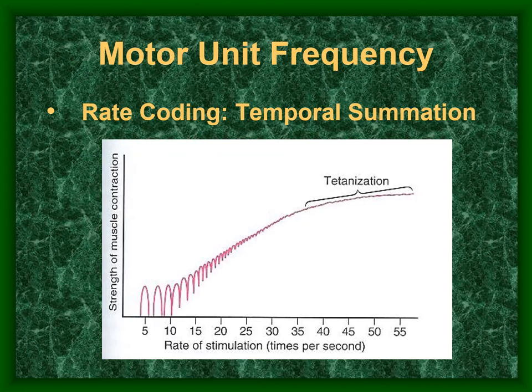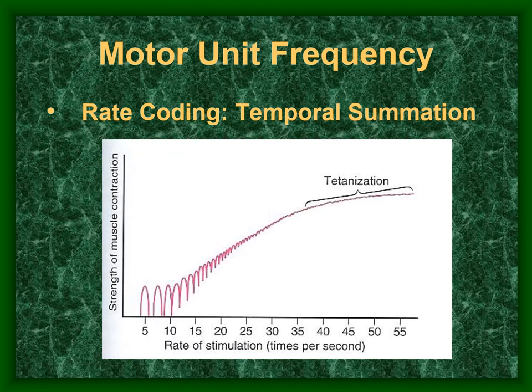The other way to increase muscle tension is by increasing the rate of firing — rate coding. What we see here is a muscle being artificially stimulated, similar to a gastrocnemius experiment in undergrad physiology. On the left side is a single muscle twitch: some tension is generated, then it relaxes all the way. Tension rises, then relaxes.